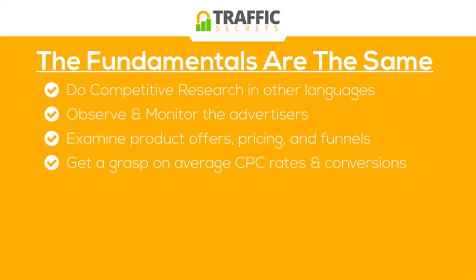You want to get a grasp on average CPC rates and conversions in these other markets. Run some tests and do some research. You can look at suggested bid prices on Facebook, the Google network, and other ad networks — it'll tell you what the average cost is or what you'd need to bid to be number one for a certain keyword. When you target a certain audience within the Facebook ad network, you'll see the suggested prices and ranges, and you can run the numbers on what conversions you'd need to turn a profit.